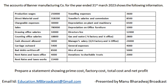Then gas and water, and manager salary — if you observe, they have told that three-fourths for factory and one-fourth for office. This means three-fourths of the total gas and water should be considered in factory, and one-fourth of total gas and water should be considered in office.